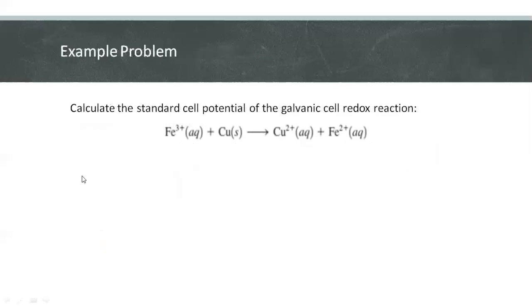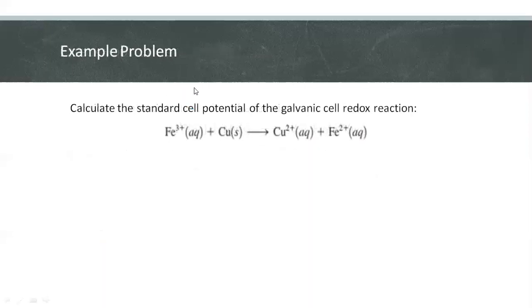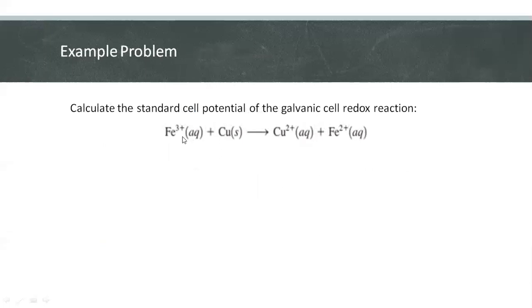So let's have our example. Calculate the standard cell potential of the galvanic cell redox reaction. So we have here iron 3 plus, plus copper, arrow copper 2 plus, plus iron 2 plus.